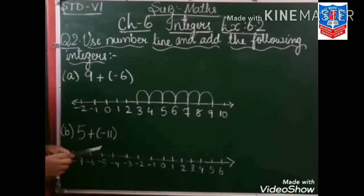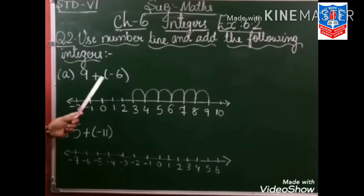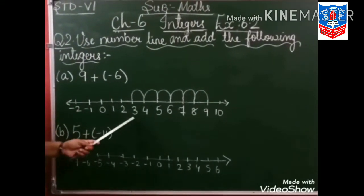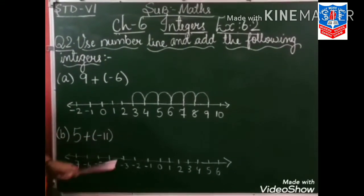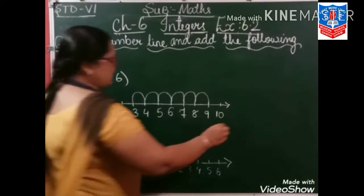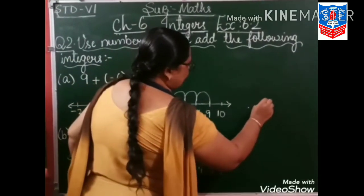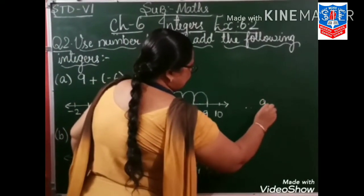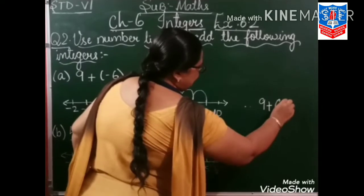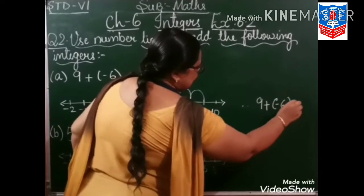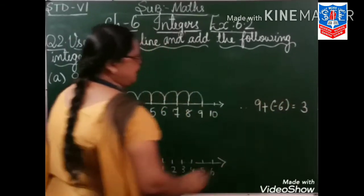6 steps to the left from 9. Now see, 9 plus minus 6 — what is our answer? 3 is our answer. Therefore, 9 plus minus 6 is equal to 3.